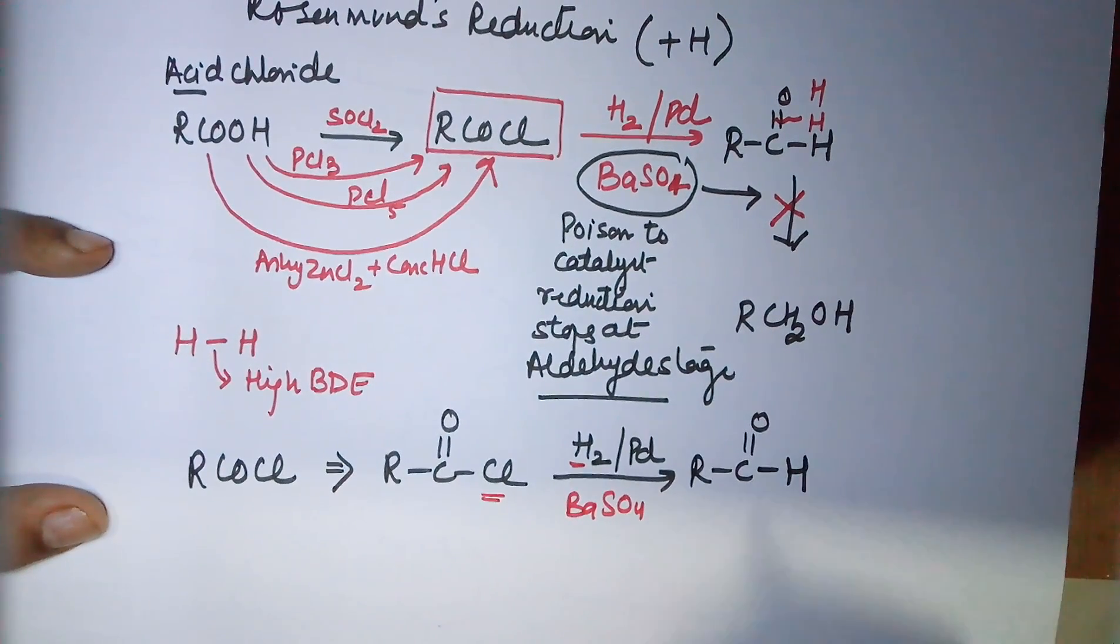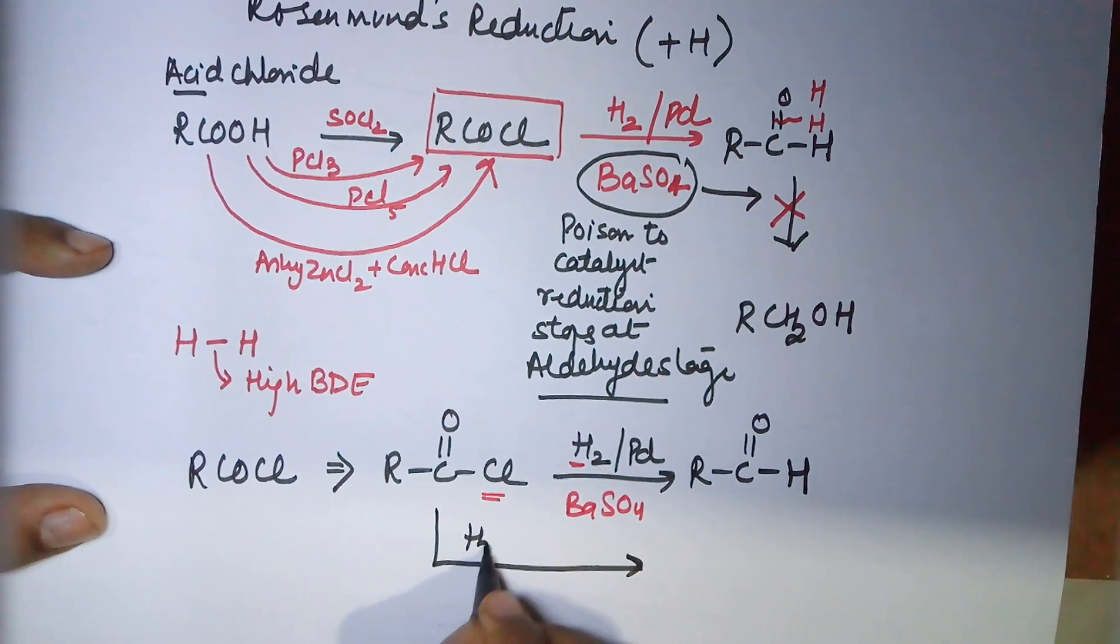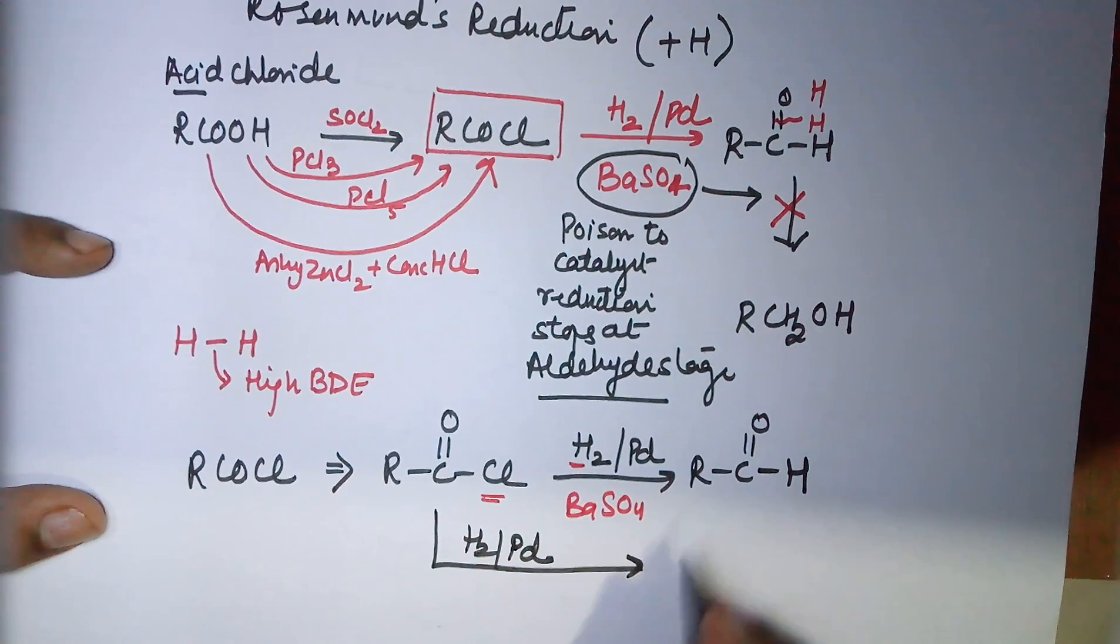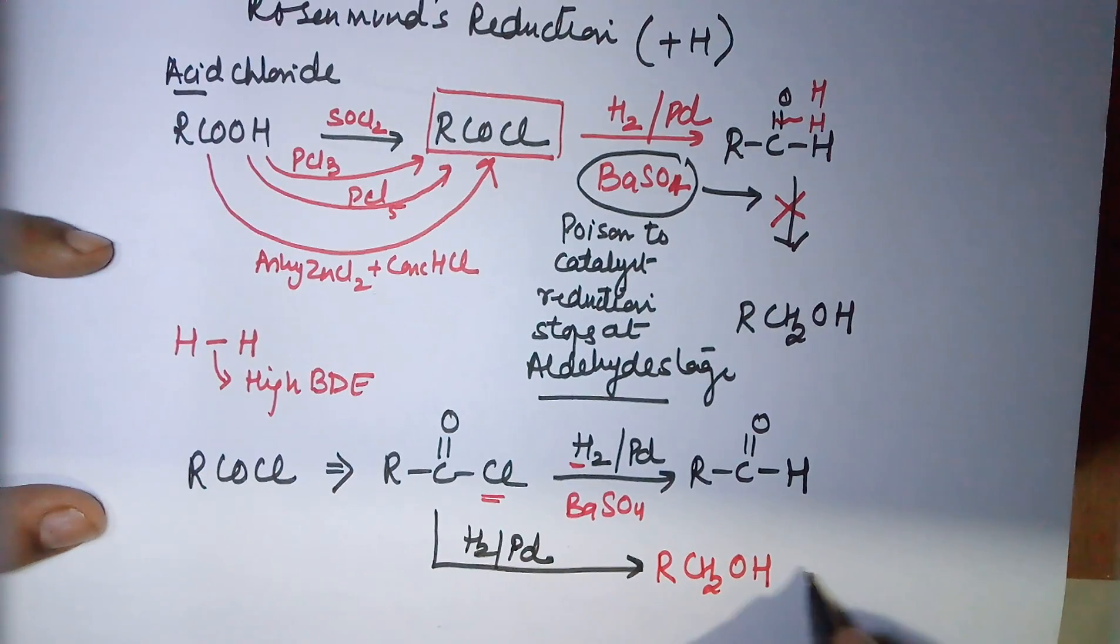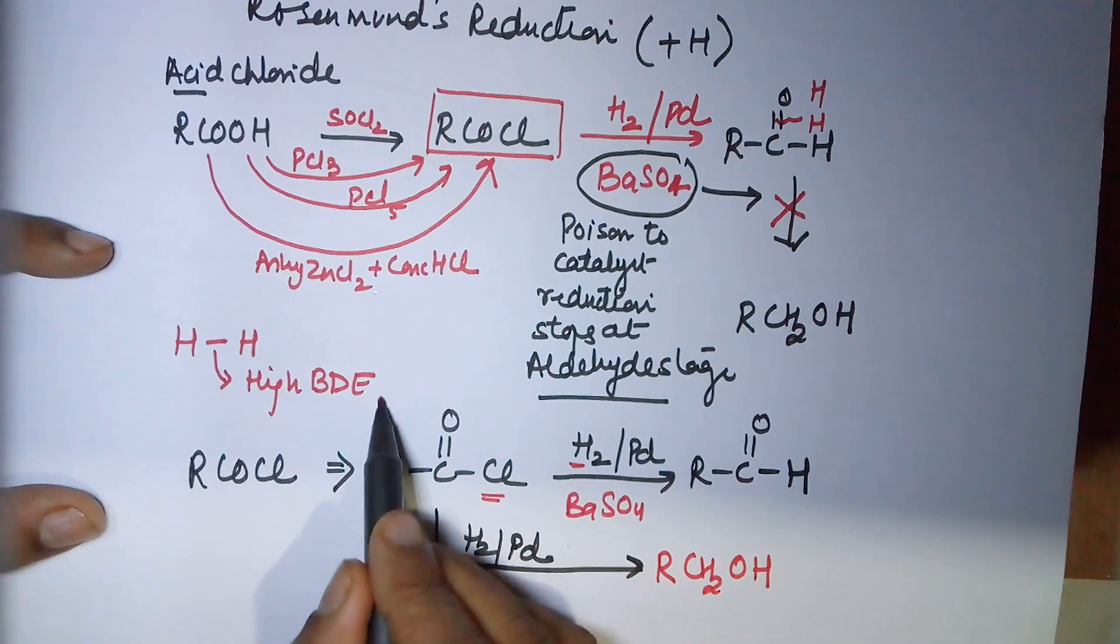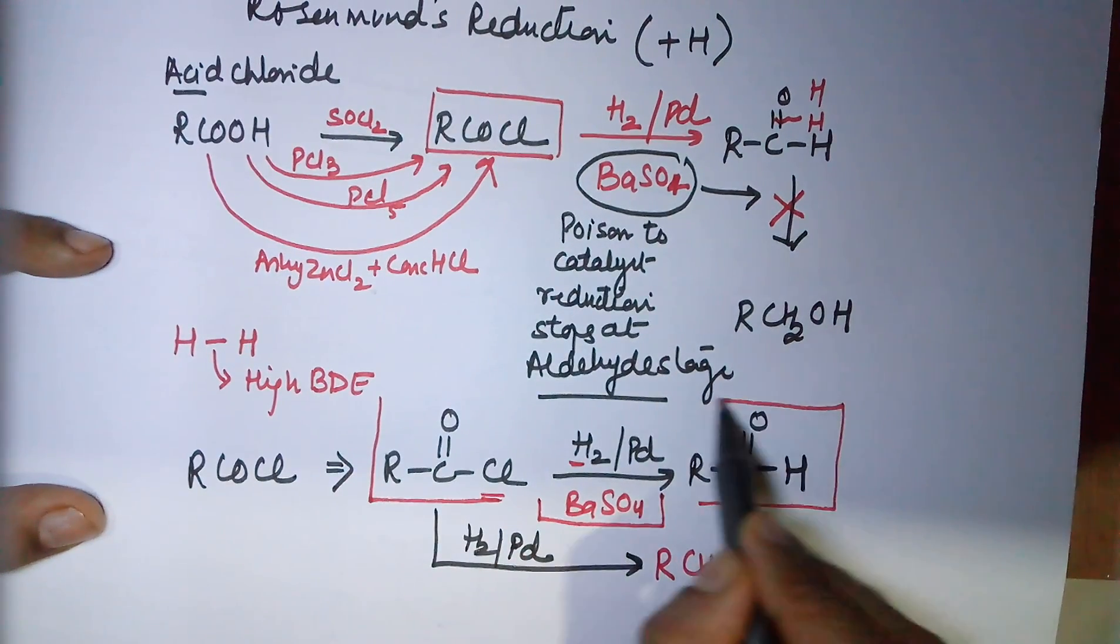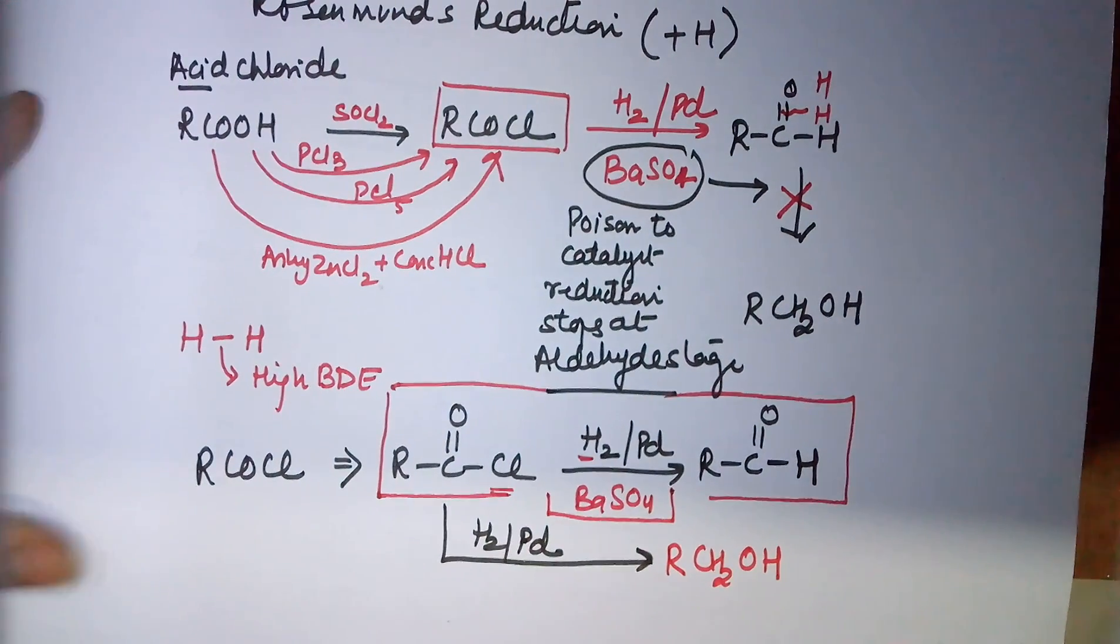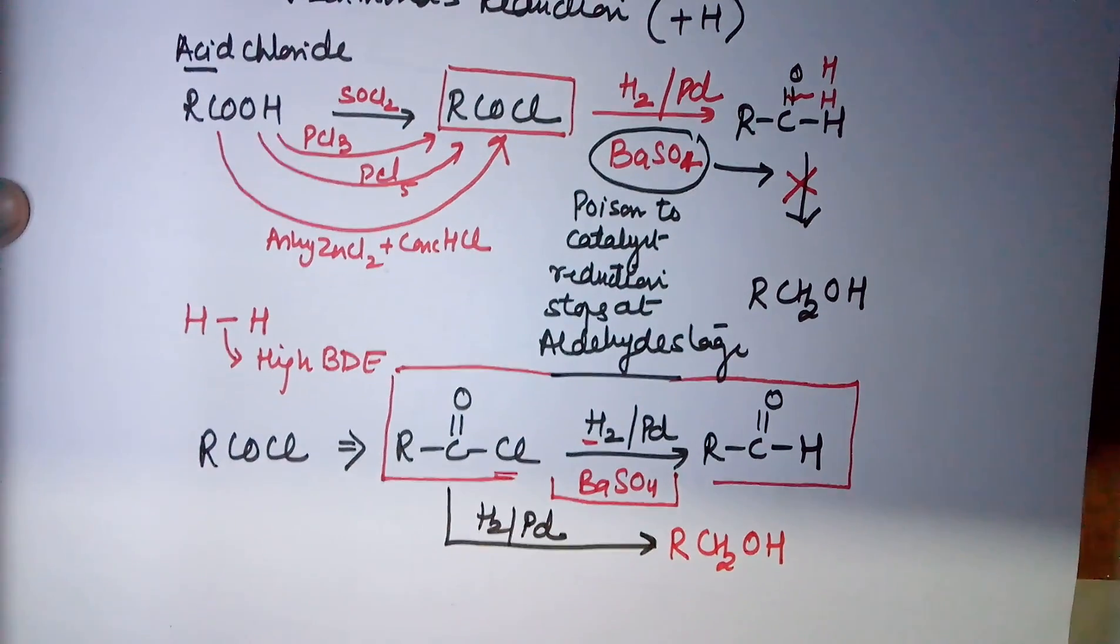This is your aldehyde where the Cl is replaced by H, hence it happens as a reduction. Your reaction stops here. In case you forget and only write hydrogen and palladium, then the reaction will not stop at the aldehyde stage - your product will be RCH2OH, which is not Rosenmund's reduction. Your Rosenmund's reduction is this, where you require barium sulfate, and there is a reasoning for it which is also asked at times: what is Rosenmund's reduction and what is the function of barium sulfate during this reduction?